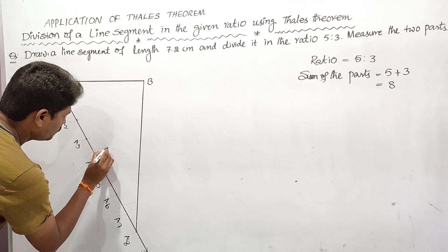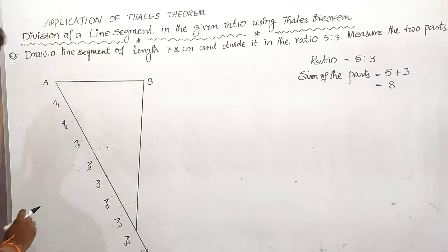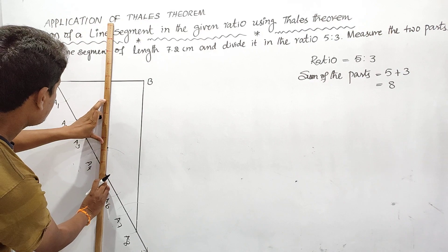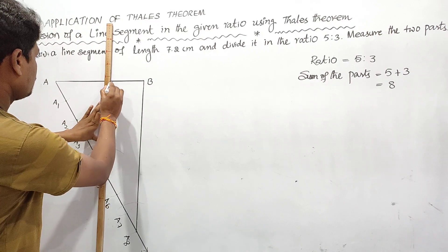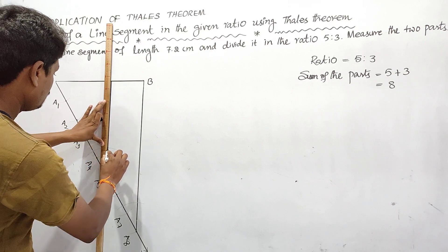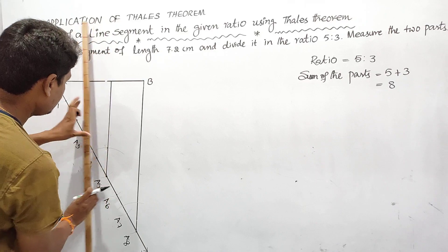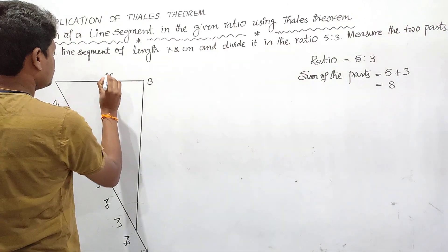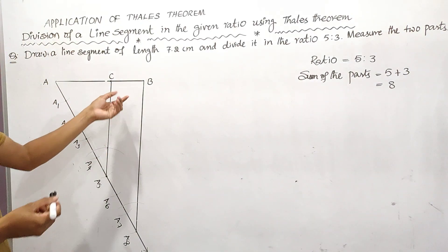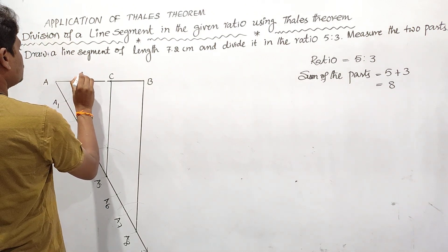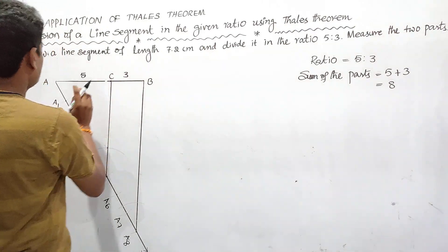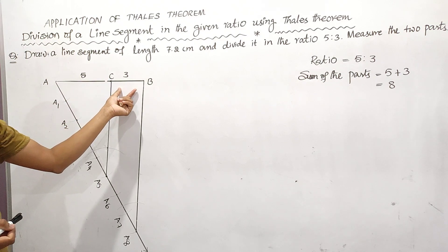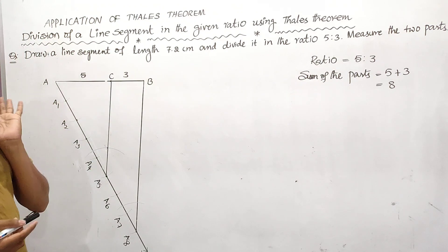By passing through these two points, draw a line. This line intersects the line segment AB at point C. Now AC to CB will be 5 is to 3. If we divide the total into 8 parts, the first part is 5 and the second part is 3.